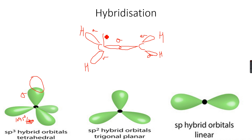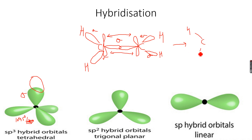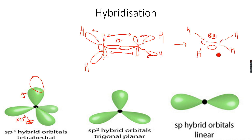Pi bonds are formed when the orbitals are overlapping sideways — they overlap like this, sideways. This sideways overlapping gives us an electron cloud. This electron cloud is shaded dark on one side and not shaded on the other. This electron cloud is known as a pi bond, and it's actually represented as a double bond.